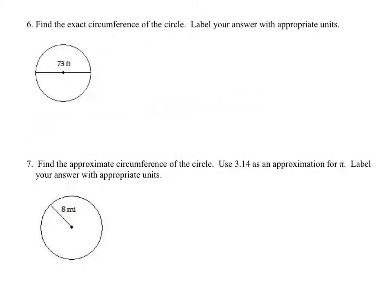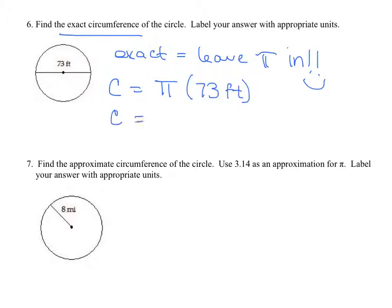Next. Now we're going to talk about the circumference of a circle. When we're talking about exact circumference, that means you're going to leave pi in. Okay? So here we go. Circumference is pi times the diameter, in this case is 73 feet. So the circumference that is exact is 73 pi feet. Done.